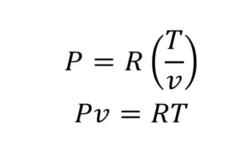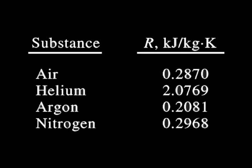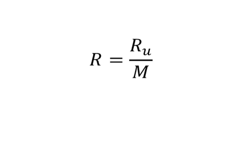Experimentally, it has been determined that at low pressures, the volume of a gas is proportional to its temperature — that is, PV equals RT. Here, the constant of proportionality R is called the gas constant, and this equation is called the ideal gas equation of state or simply the ideal gas relation. A gas that obeys this relation is called an ideal gas. In this equation, P is the absolute pressure, T is the absolute temperature, and V is the specific volume. The gas constant R is different for each gas and is determined from R equals RU over M, where RU is the universal gas constant and M is the molar mass, also called molecular weight of the gas. The constant RU is the same for all substances.